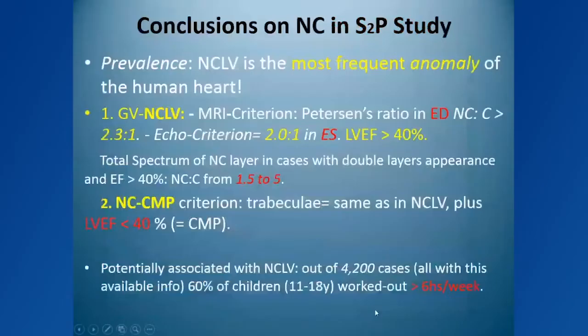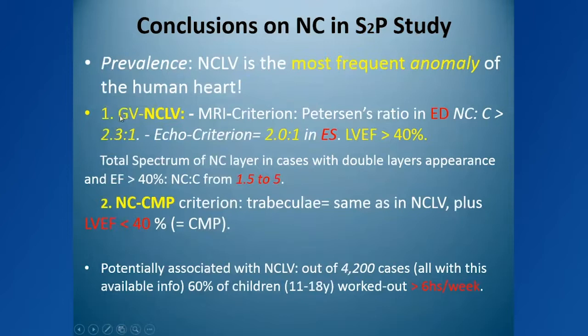The first conclusion from the S2P — Screening to Prevent — study was that unexpectedly, non-compaction left ventricle is the most frequent anomaly in the human heart. This can occur in two conditions: one, frequent and benign, which should be called 'garden variety' non-compaction left ventricle; and another, much less frequent, called non-compaction cardiomyopathy, which is less than 0.1% of cases in this context.